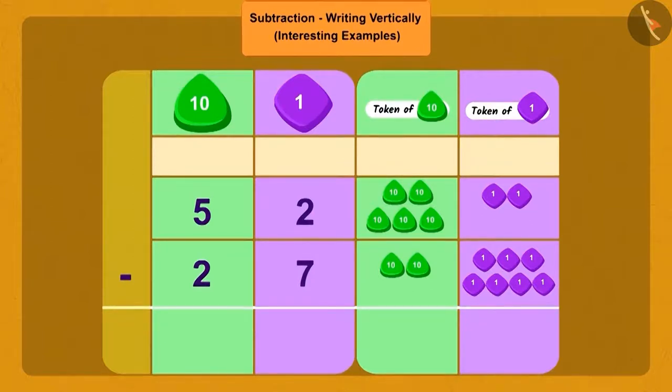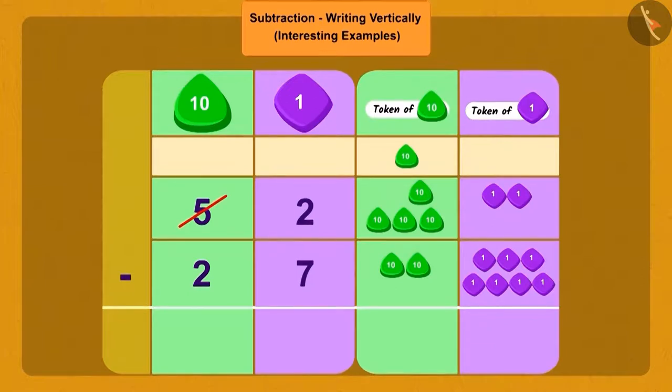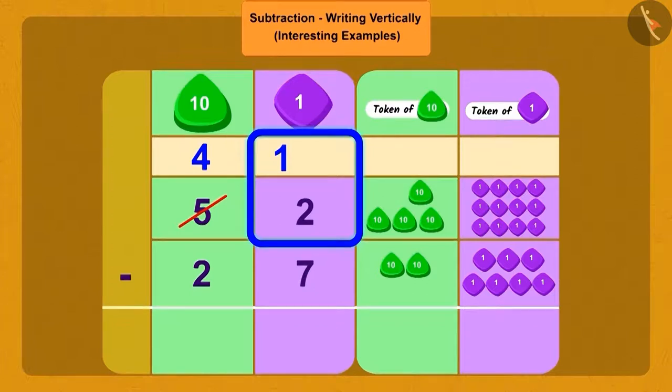Now how will we find out how many more pages did Shere Khan read? Subtract 27 out of 52. Now can we subtract seven ones from two ones? Now how will we do this? We will borrow one tens from five tens. Now how do we write this? We will show it like this by striking off five tens and writing four tens in its place, and we will add ten ones to two ones like this.